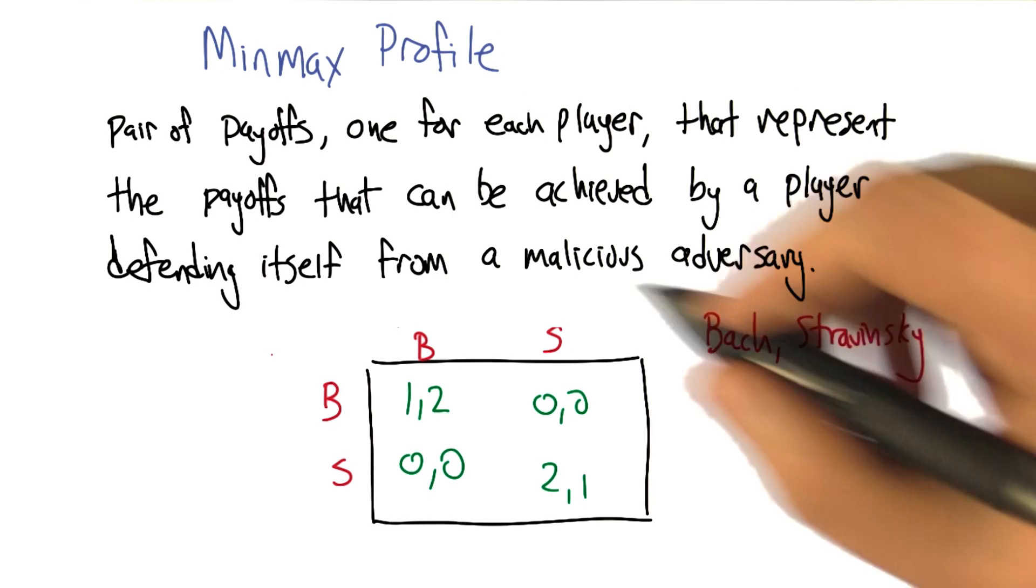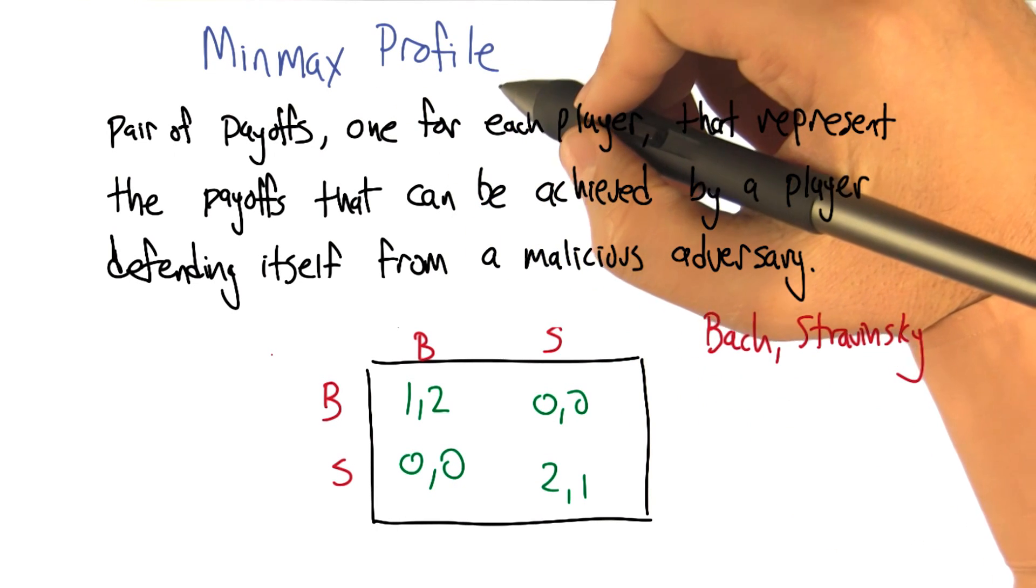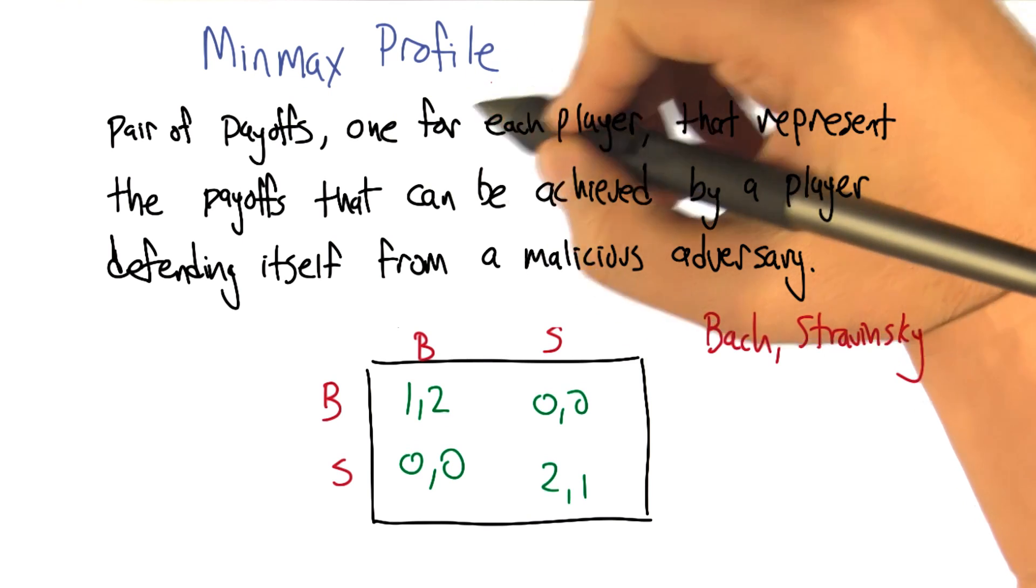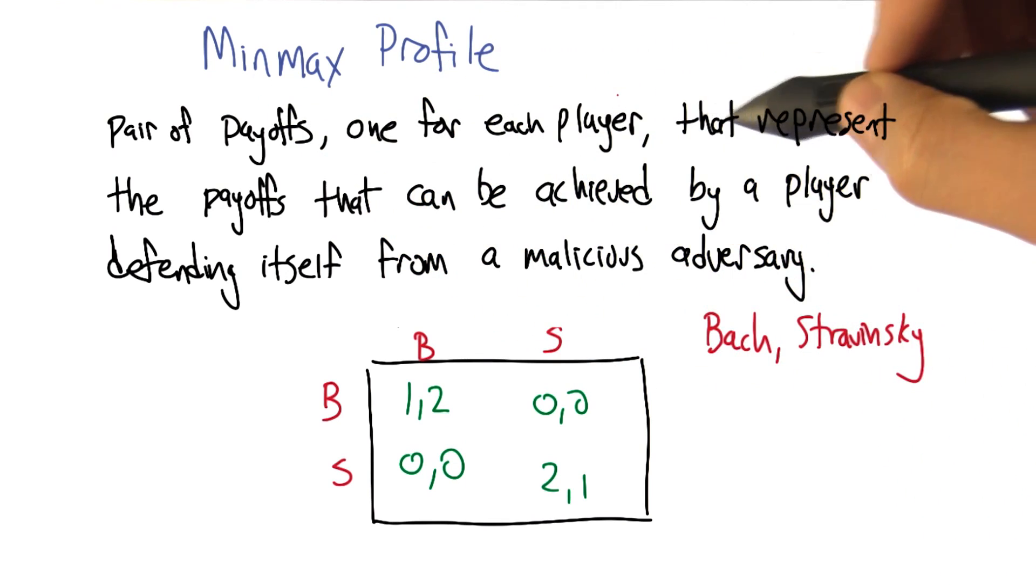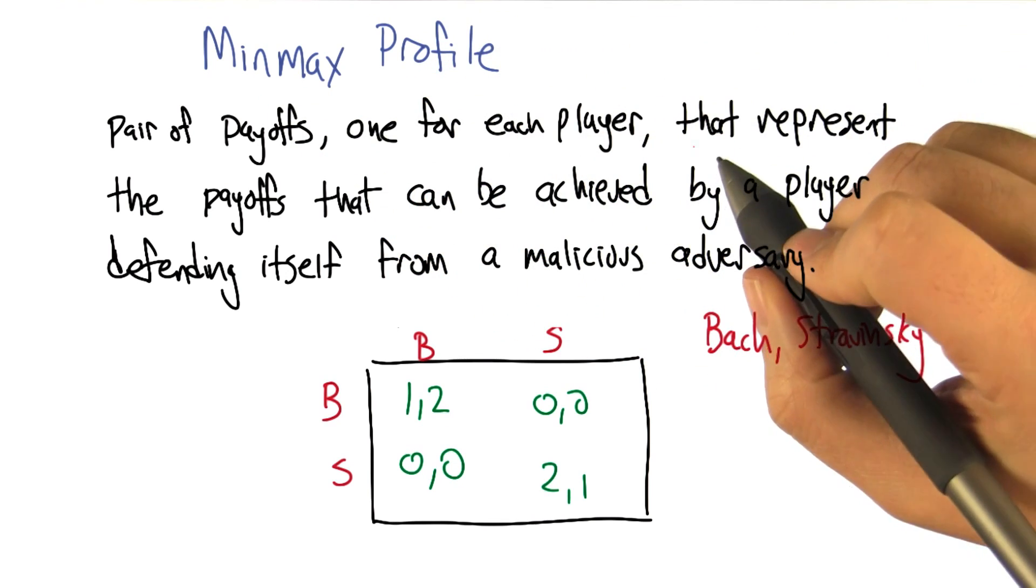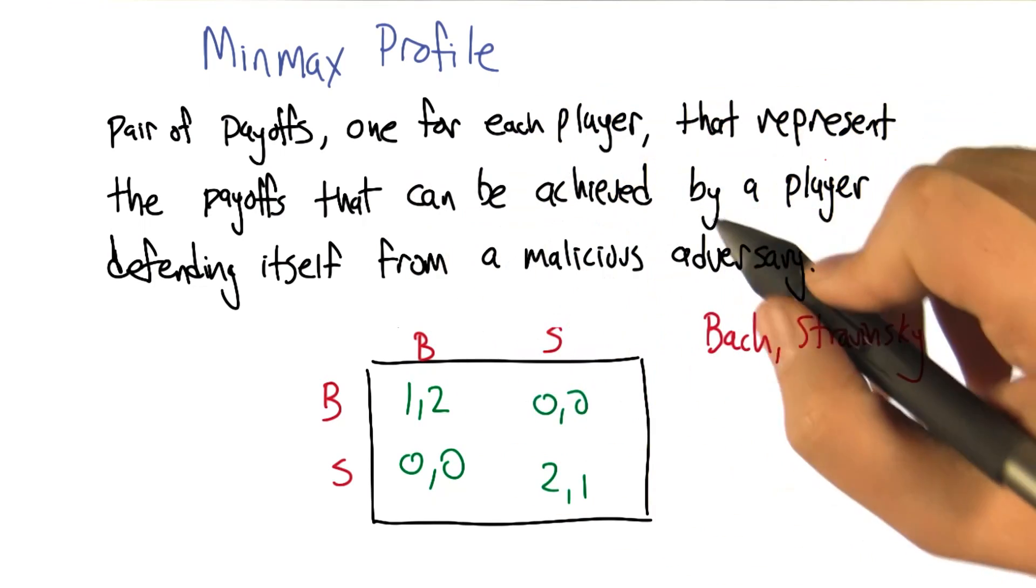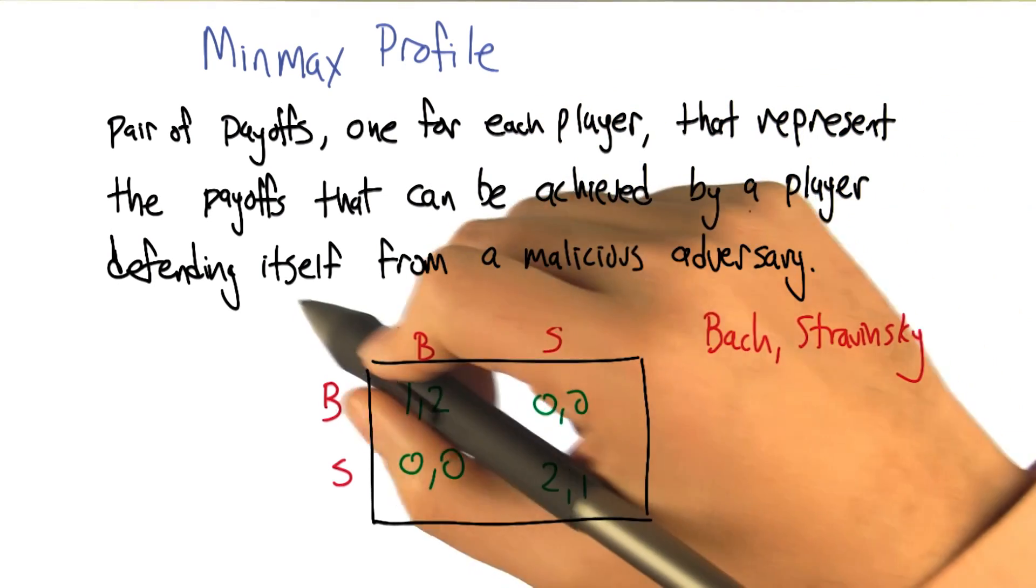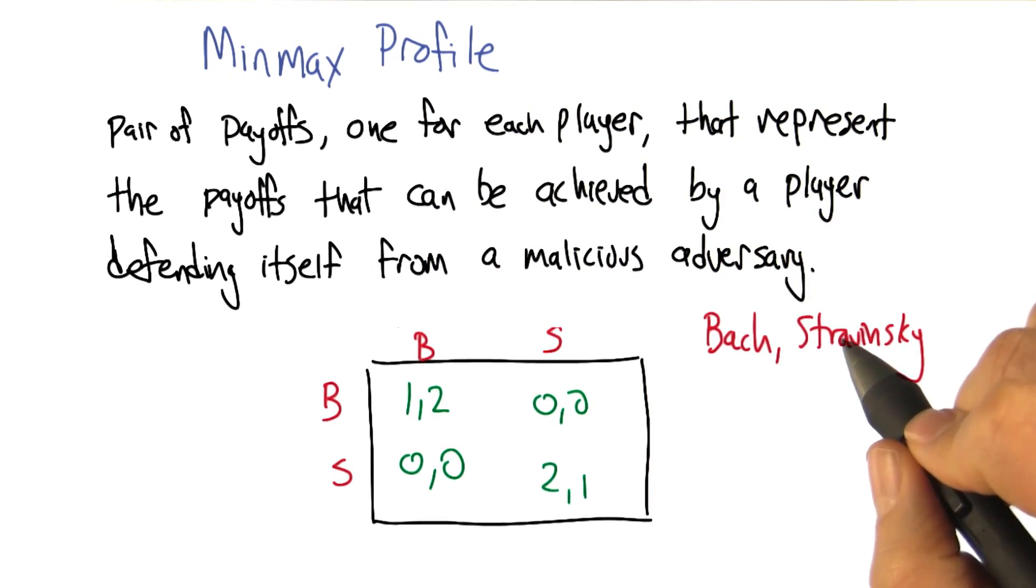All right, the next concept that we're going to need to understand the folk theorem is the notion of a min-max profile. So a min-max profile is going to be a pair of payoffs, one for each player, and the value for a player represents the payoffs that that player can achieve by defending itself from a malicious adversary.